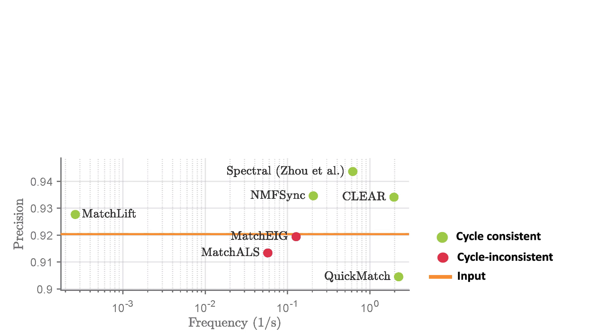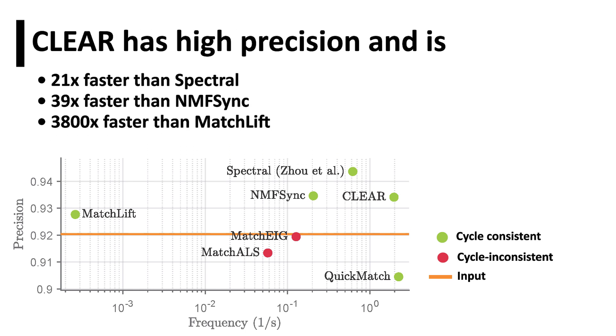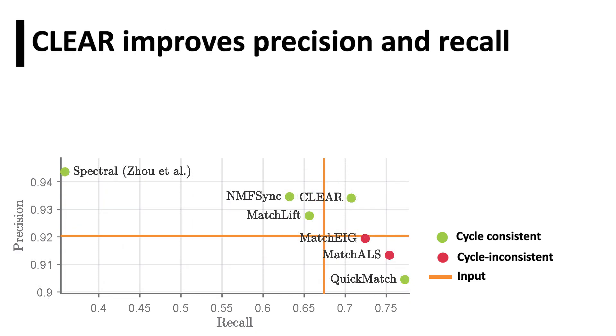CLEAR generates cycle consistent output with higher precision and faster runtime. In addition, CLEAR improves both the precision and recall of the noisy input on this dataset.